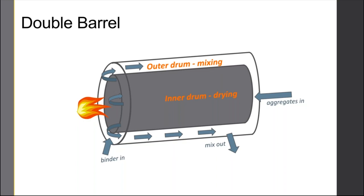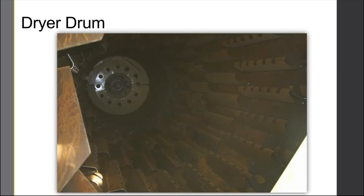On the inside of a dryer drum, you'll see all these flights — little metal vanes with certain angles. A lot of study goes into how best to shape those different vanes and flights to make sure we tumble the aggregates, evenly apply the heat, and make sure that everything is getting mixed as well as possible.